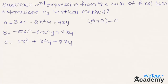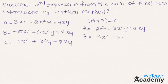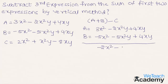Let us first add expressions a and b. Expression a is 3x² minus 2x²y plus 4xy, and expression b is minus 5x² minus 5x²y plus 4xy. Adding: 3x² minus 5x² is minus 2x², minus 2x²y minus 5x²y is minus 7x²y, and 4xy plus 4xy is 8xy. So a plus b equals minus 2x² minus 7x²y plus 8xy.